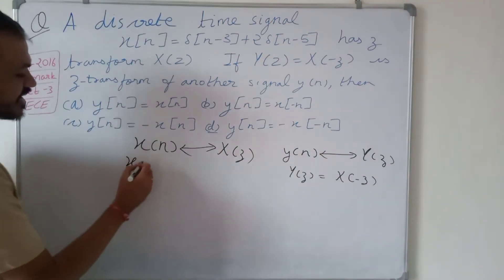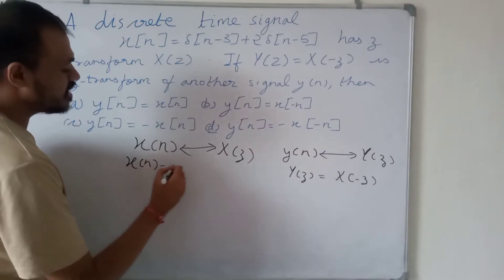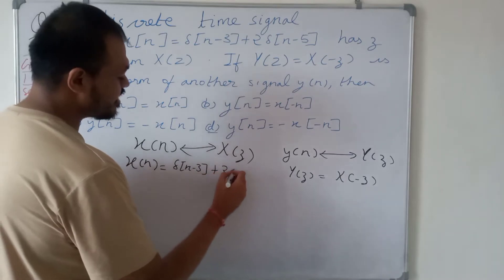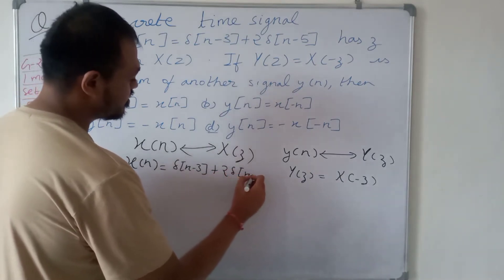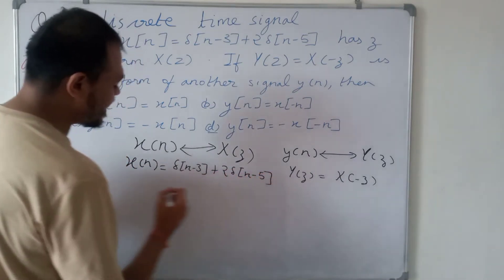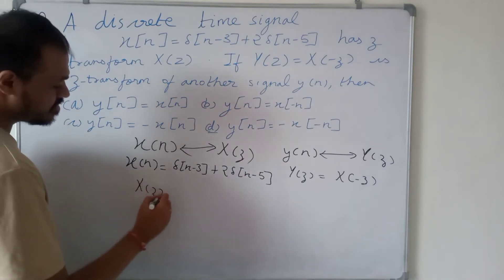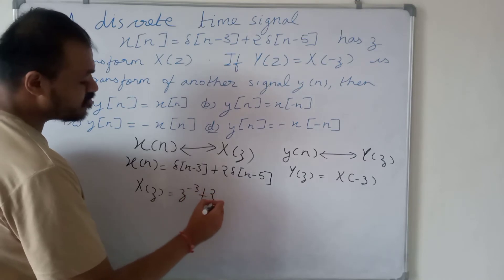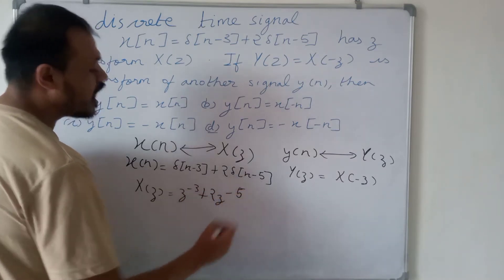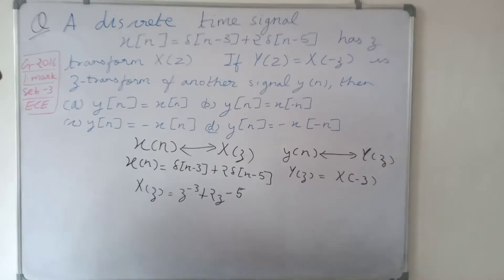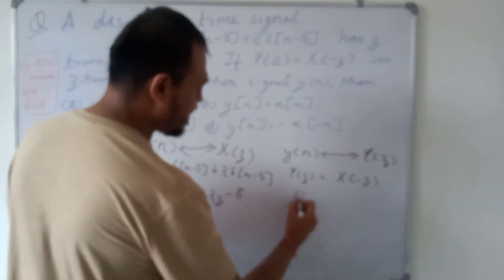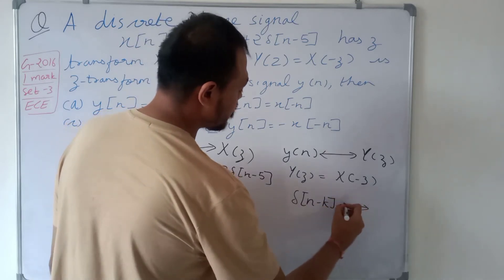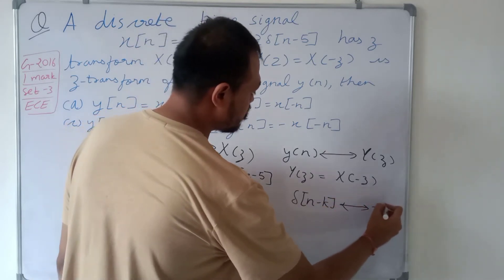So x of n is given as delta of n minus 3 plus 2 delta of n minus 5. The Z-transform of x is z to the power minus 3 plus 2 z to the power minus 5, using the Z-transform property that the Z-transform of delta of n minus k is z to the power minus k.